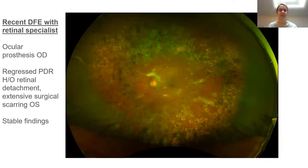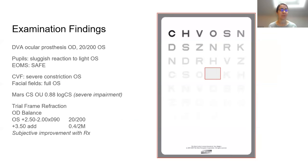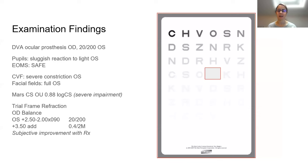At this visit, our patient had no vision in the right eye due to the ocular prosthesis. In the left eye she had 20/200 vision with a sluggish pupillary response to light. Her ocular motilities were smooth, accurate, full, and extensive, and in that left eye she had severe visual field constriction. We did facial fields to assess severity and check for central or paracentral scotomas — her facial fields in the left eye were nice and full. Contrast sensitivity testing showed 0.88 log CS, revealing a severe impairment.